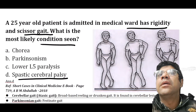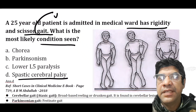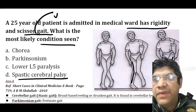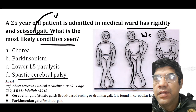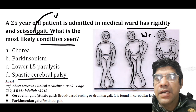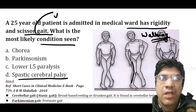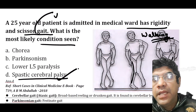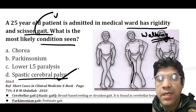Scissor gait describes a walking pattern in which one leg crosses in front of the other during the walking cycle, resembling the closing movement of a pair of scissors. This condition is often associated with spastic cerebral palsy, involving spastic muscle tone in the lower limbs.